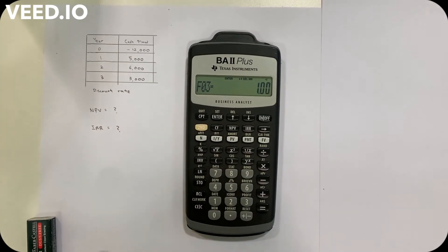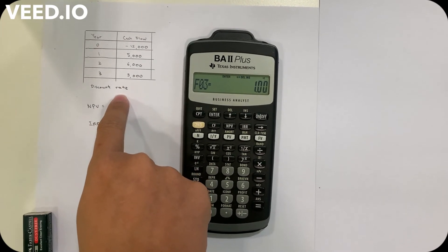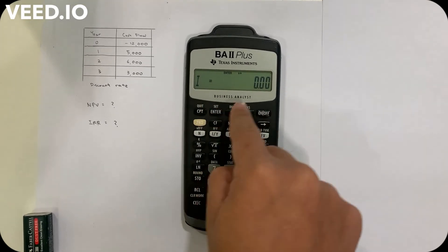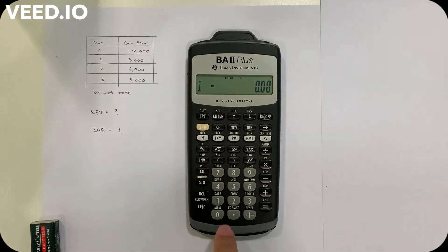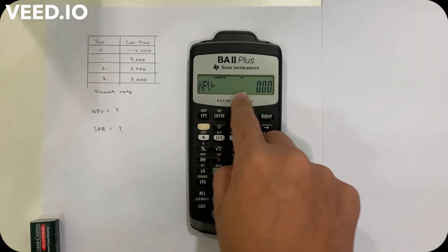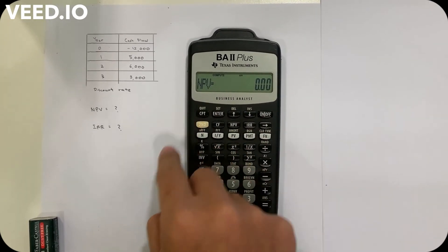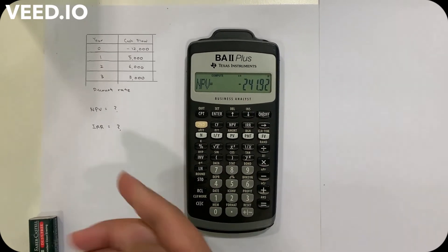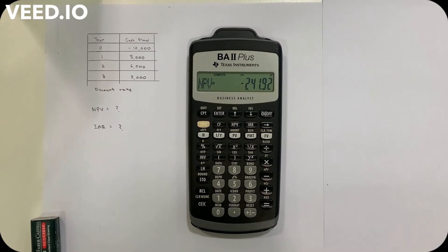To find NPV if the discount rate is 10%, I press the NPV button where they require us to key in the discount rate. So I key 10, press enter and going down again. Then I press CPT button, and this is how I get the NPV for this project is negative 241.92.